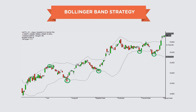Notice how many times price hit these Bollinger Bands and immediately reversed. If we took a position in the opposite direction, we would have made a profit. However, some points failed to reverse — look at these ones. It kept going in its previous direction and it's a very frequently occurring pattern. For example, when the market's going up, it touches the Bollinger Band, you expect it to reverse but it continues moving up.